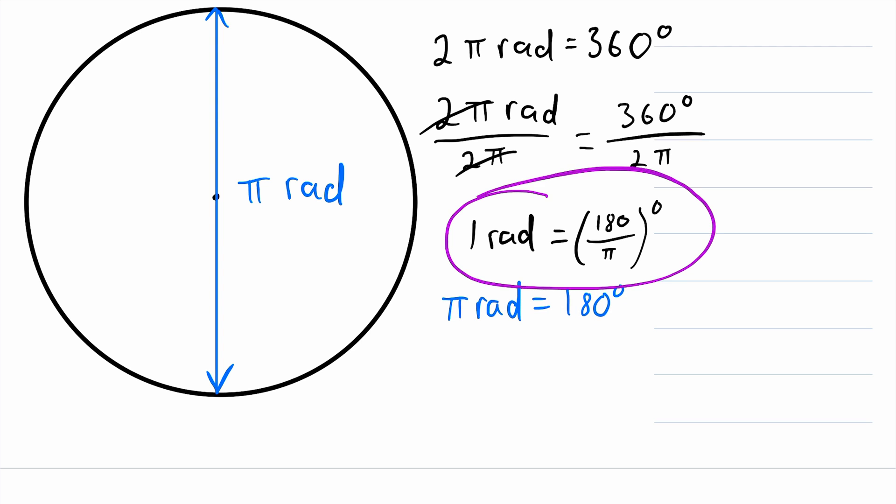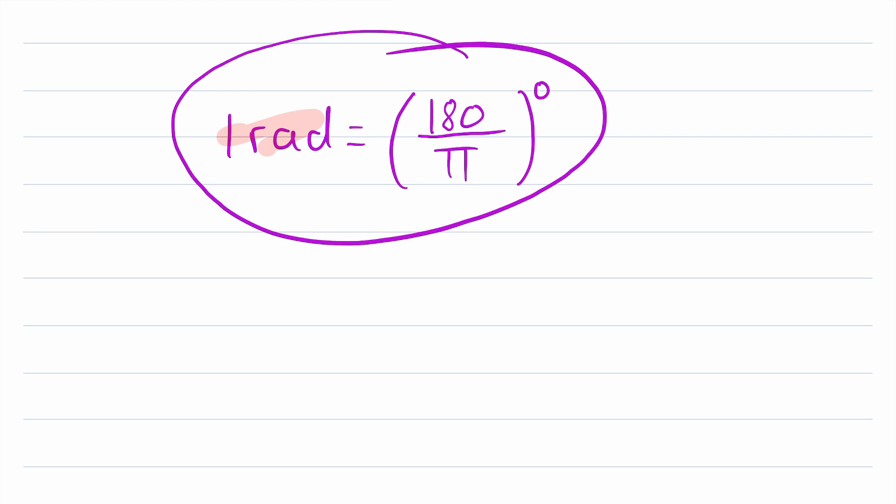Now, before we go, I'm just going to write this equality in a slightly different way that might seem more intuitive to some of you. So let me scroll on down a little bit. Here's that equality we had above, 1 radian equal to 180 over π degrees.